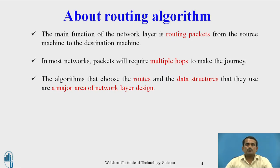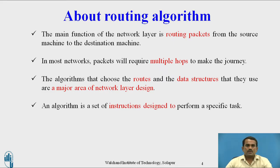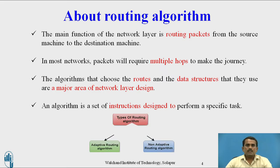The algorithm chooses the routes and the data structures to transfer the packets. An algorithm is a set of instructions designed to perform a specific task — here, transmitting packets to different destinations. Based on this, two types of routing algorithms have been defined.